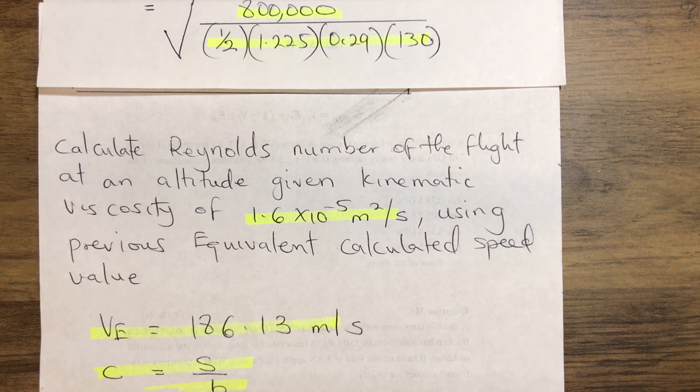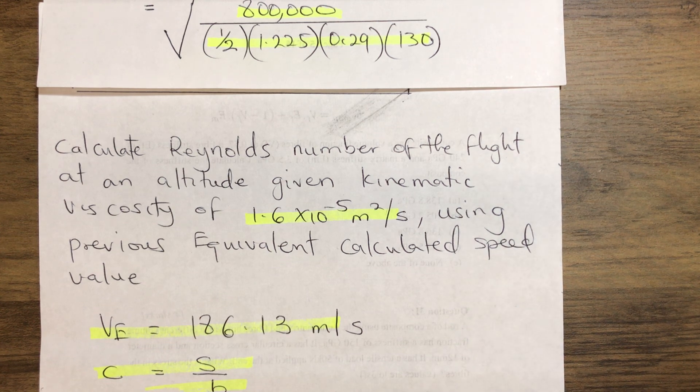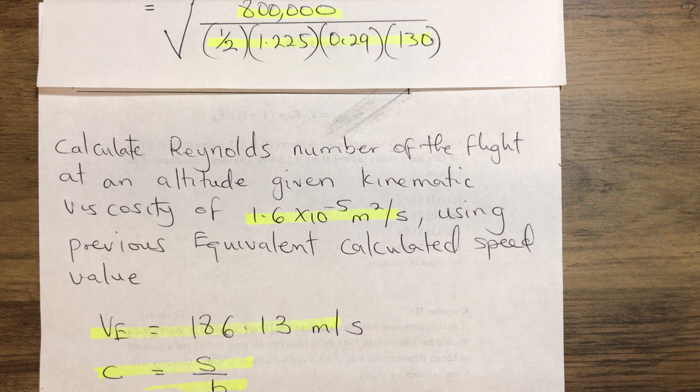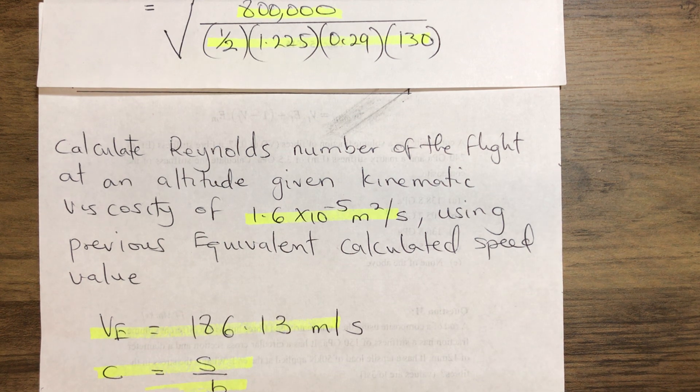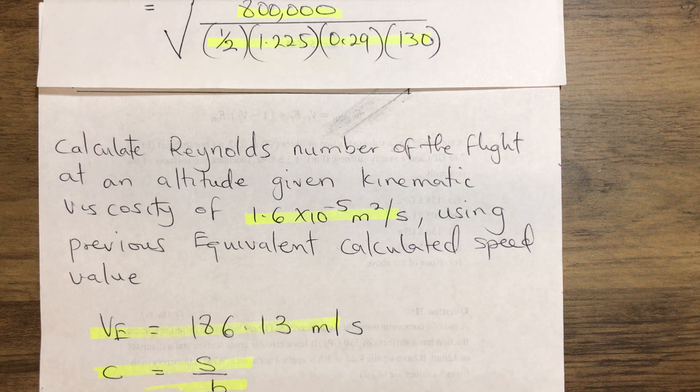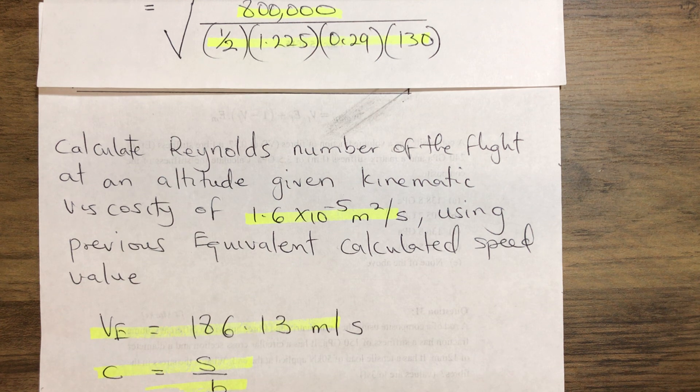Hello everyone and welcome to our channel once again. Today we are asked to calculate the Reynolds number of flight for an aircraft at a given altitude using the previous equivalent aircraft speed calculated.